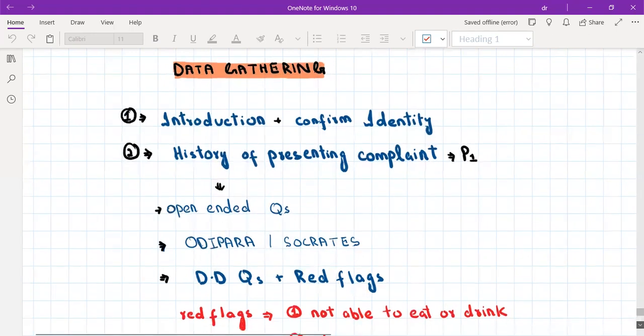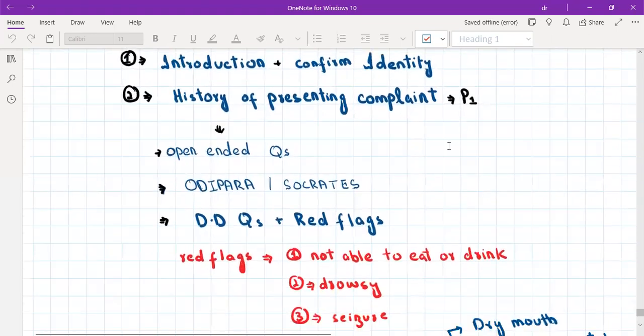For those who do not know what OLDIPARA and SOCRATES is, SOCRATES is a mnemonic that we ask when the presenting complaint is pain. Okay. So it can be pain in any part of the body, ear pain, headache or whatever. Then we ask SOCRATES and SOCRATES stands for site of the pain, onset, character, radiation, aggravating factor, treatment or relieving factor and severity. Okay. And OLDIPARA is for symptoms other than pain. Okay. So for example, the symptom is cough. Then we will ask OLDIPARA. So OLDIPARA is onset, duration, intensity, progression, aggravating factor, relieving factor and anything else. Okay.